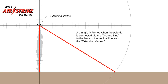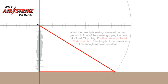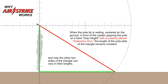A triangle is formed when the pole tip is connected via the ground line to the base of the vertical line from the extension vertex. When the pole tip is resting centered on the ground in front of the vaulter gripping the pole at a fixed grip height with a properly placed extension arm, the length of the pole side of the triangle remains constant, and only the other two sides of the triangle can vary in their length.